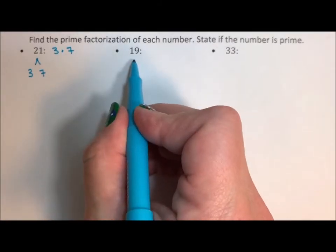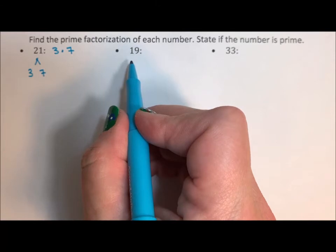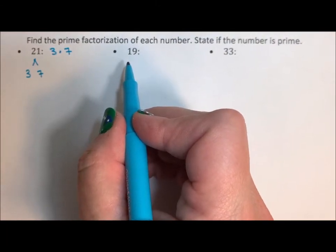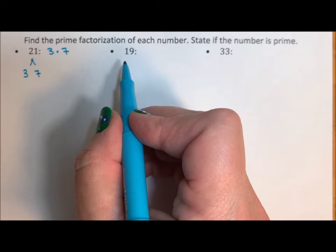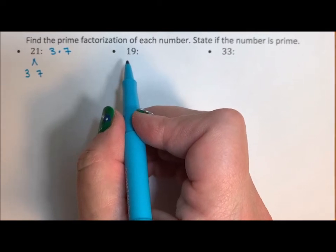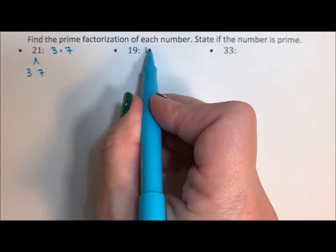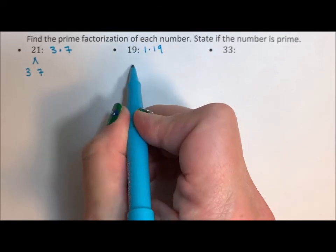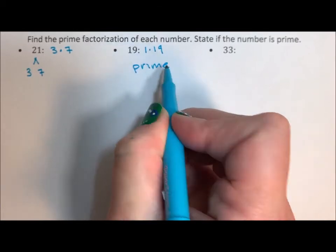19, well the only thing that goes into 19 besides 19 is 1. Because the only thing that goes into 19 besides 19 is 1, it's going to be 1 times 19, which means this is prime.